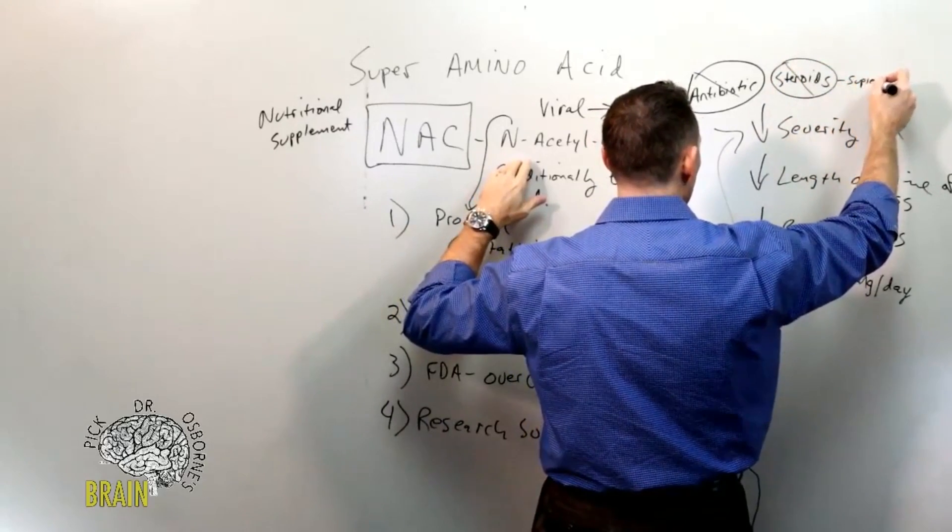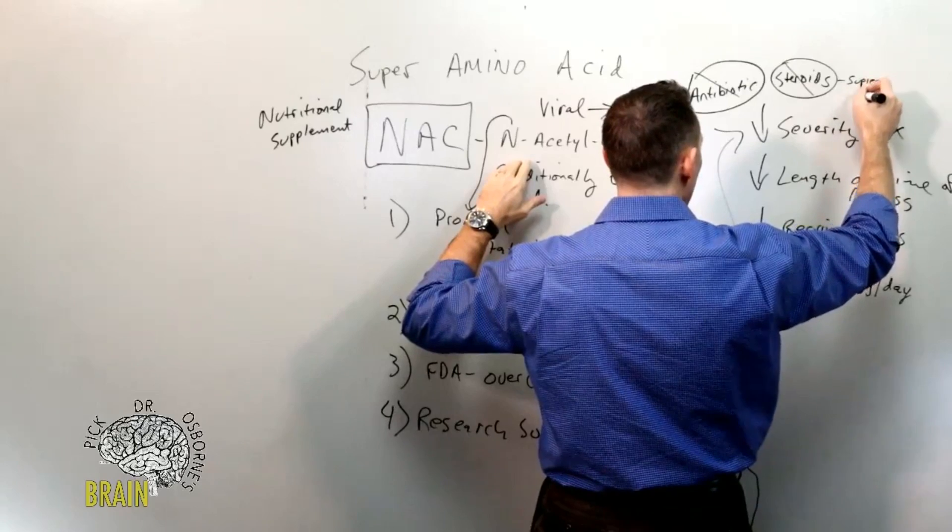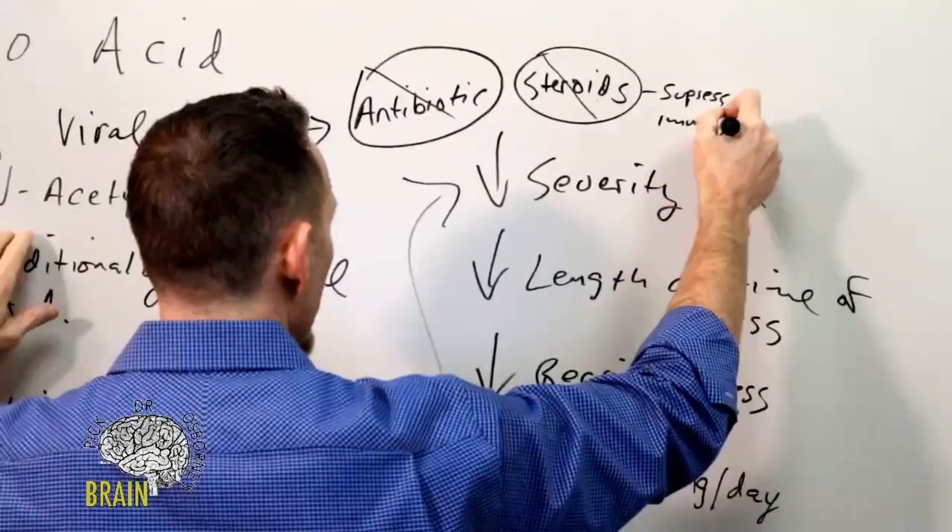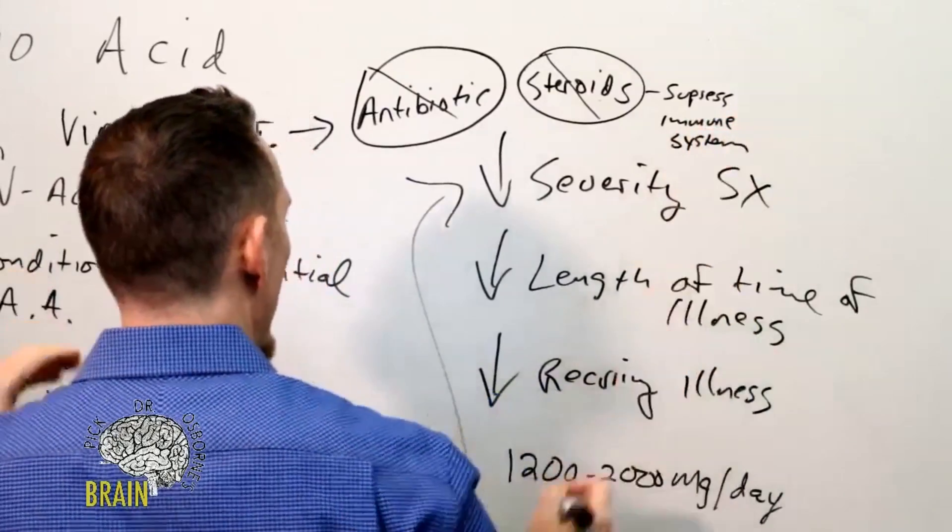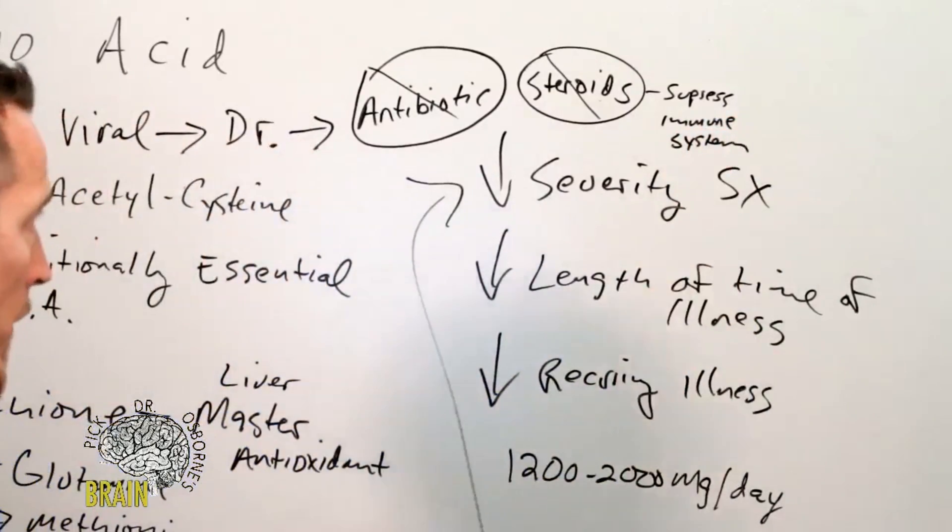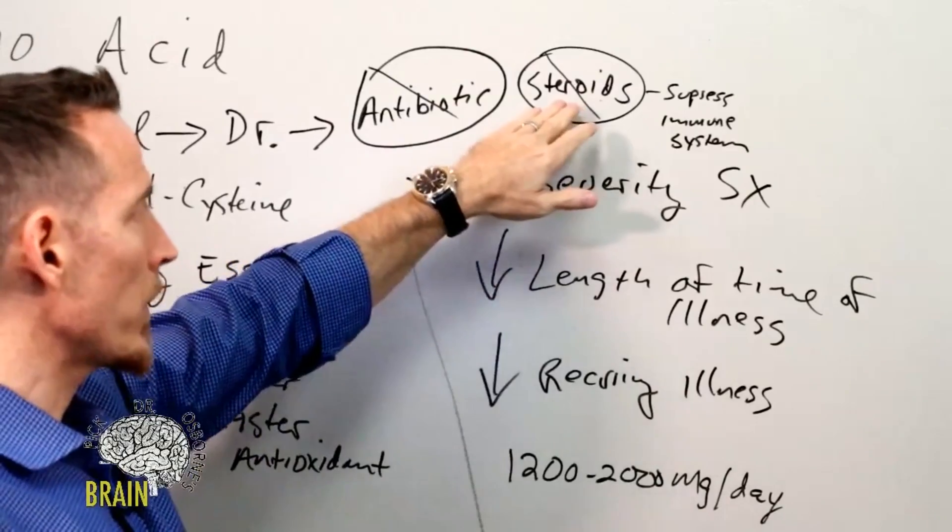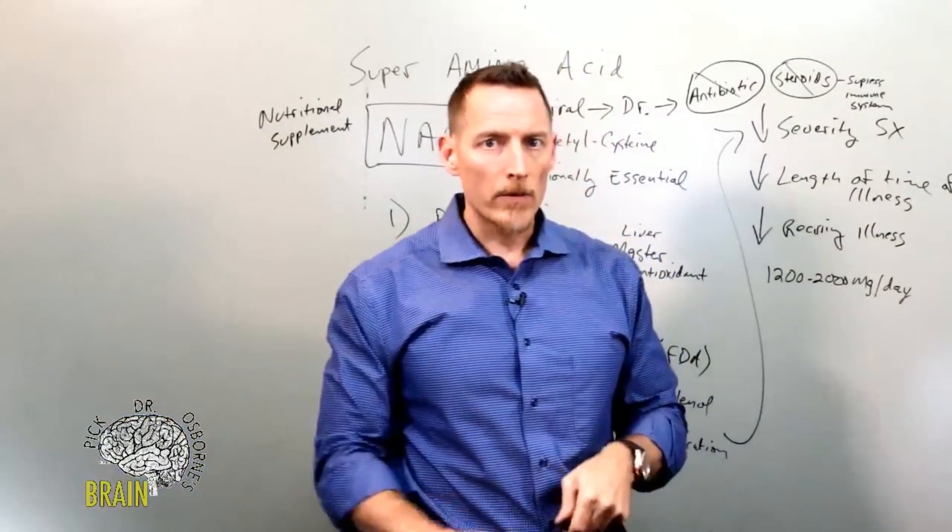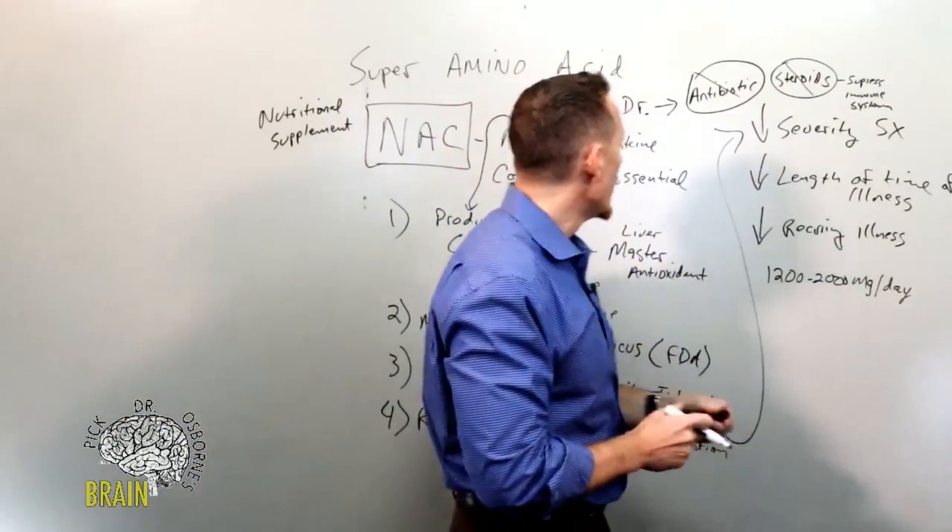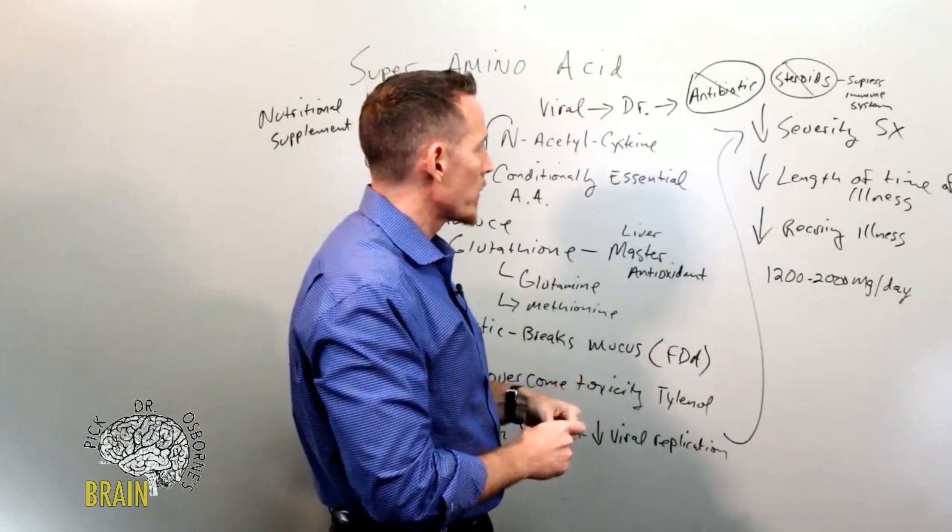The problem with steroids is that we don't want to do that necessarily because steroids suppress the immune system, and we don't want to be suppressed. We want our immune system working to full capacity here. Otherwise, what ends up happening is you may improve the way you feel short term by taking the steroid, but you increase the actual longevity of the illness itself. An antibiotic doesn't really work, a steroid doesn't really work.